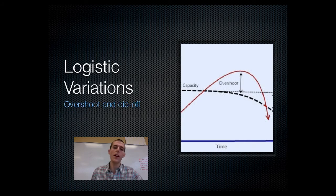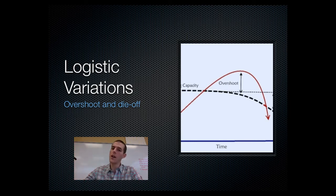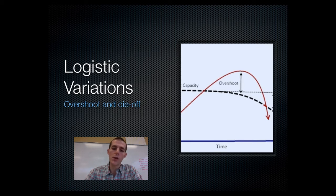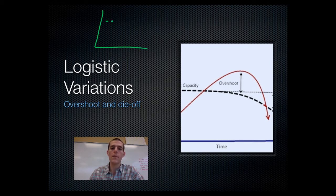There are variations to the logistic model, because very few populations will just get up and ride along the carrying capacity and stay there. One situation that is fairly common is called overshoot and die-off. Here's a graph — here's our carrying capacity.